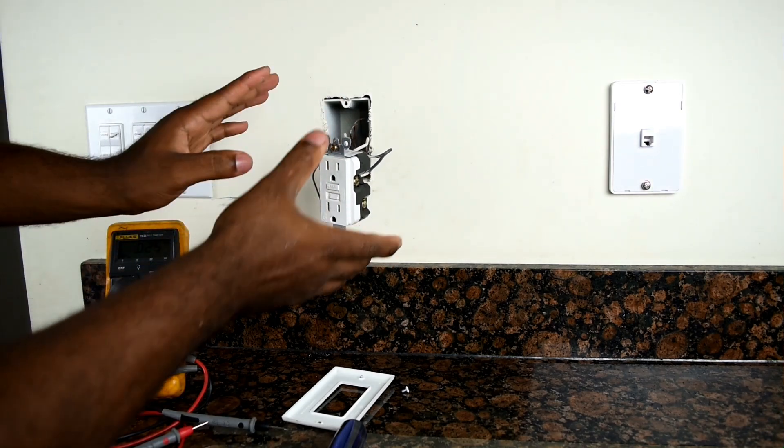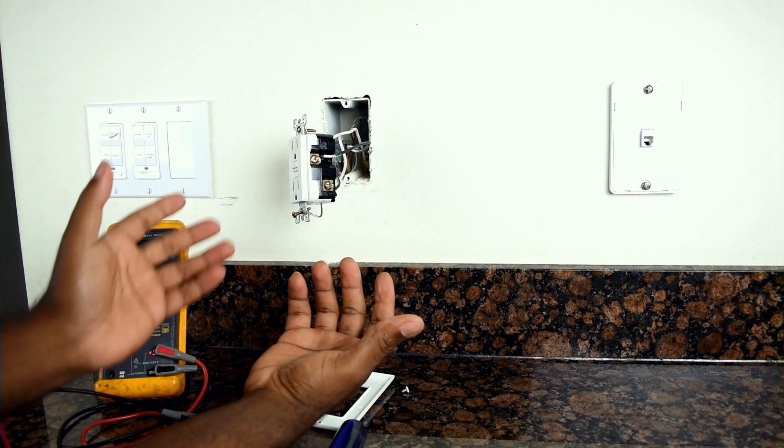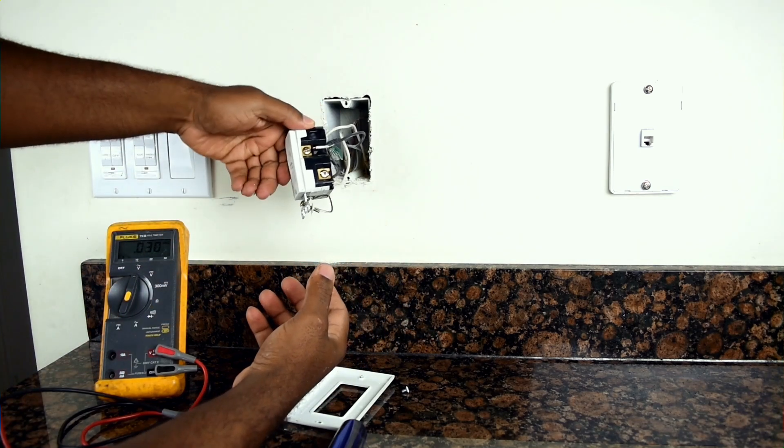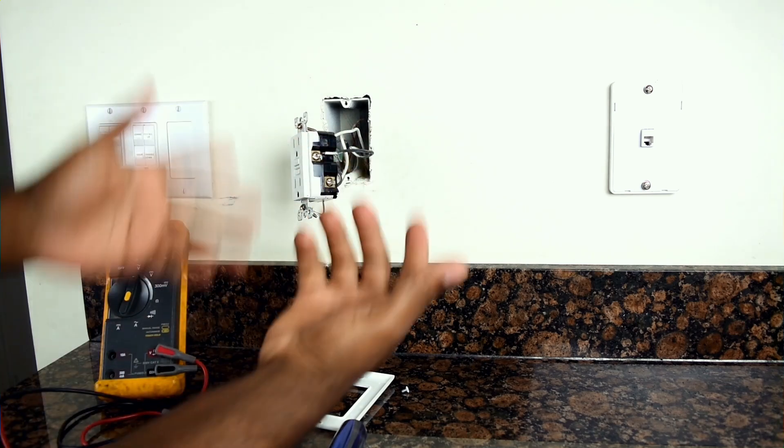If you're afraid to do something like this, even though the power is off, one thing you can do is use a rubber glove and you won't get shocked. The next thing you can do is just take these off one at a time and place them on the new outlet.